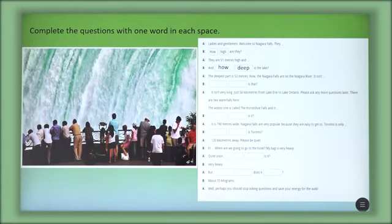And it continues: And how deep is the lake? The deepest part is 52 meters. Now the Niagara Falls are on the Niagara River. How long is that? It isn't very long, just 58 kilometers from Lake Erie to Lake Ontario. Please ask any more questions later. There are two waterfalls here. The widest one is called the Horseshoe Falls. And how wide is it? It is 790 meters wide.